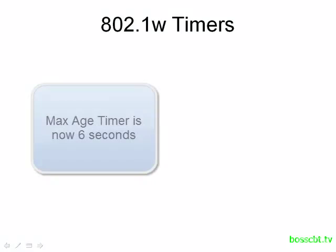The next couple of topics will highlight differences between Rapid Spanning Tree and Standard Spanning Tree. The first one is the timers. With Rapid Spanning Tree, the max age timer is now 6 seconds as opposed to the 20 seconds with Standard Spanning Tree, so that's a pretty big improvement.